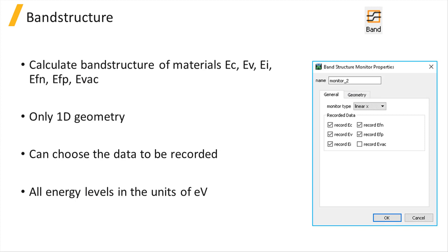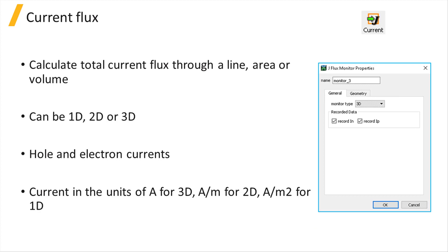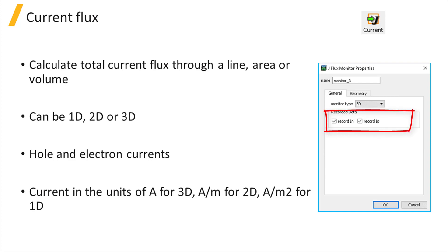The current flux monitor can calculate the total flux of current through a line, area, or volume of the simulation region. The monitor geometry can be 1D or linear, 2D, or 3D. The user has the option to record electron or hole current, or both. The monitor's location and size can be adjusted under its geometry tab. The current is reported in the units of amperes for a 3D monitor, amperes per meter for a 2D monitor, and amperes per meter squared for a 1D monitor.